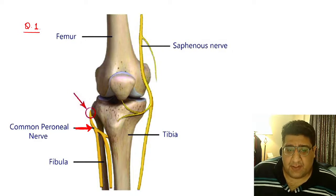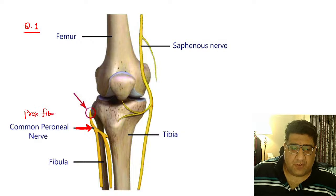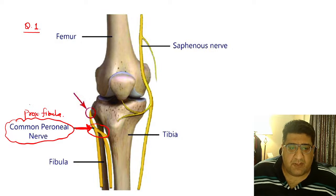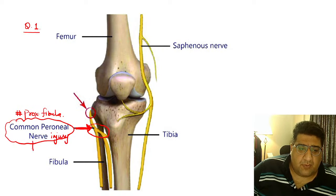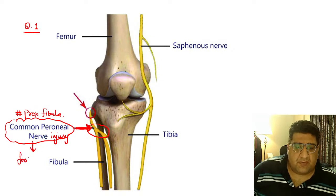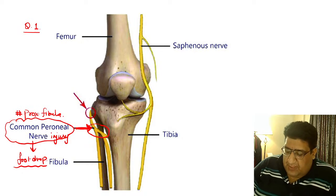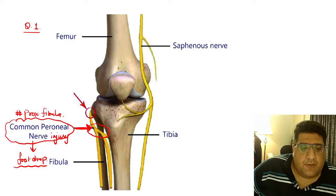They asked about the gait. Everyone knows that in the proximal fibula you have a nerve called the common peroneal nerve, making a loop around it. If there is a fracture of this area, you will definitely have common peroneal nerve injury. So fracture of the proximal fibula will give you a common peroneal nerve injury, and this common peroneal nerve injury will essentially give rise to what is called foot drop.